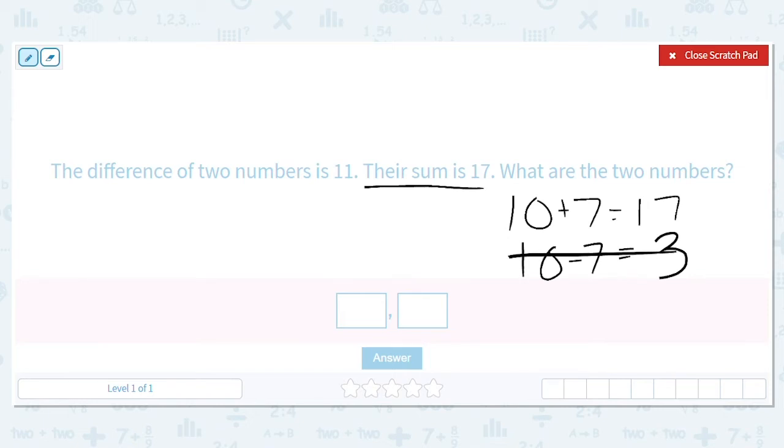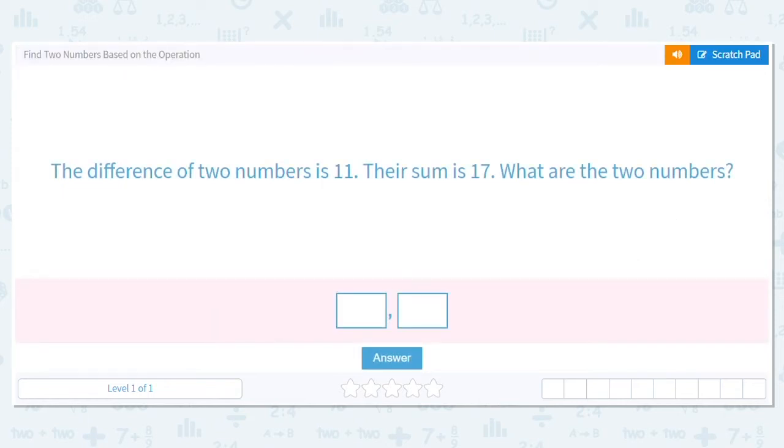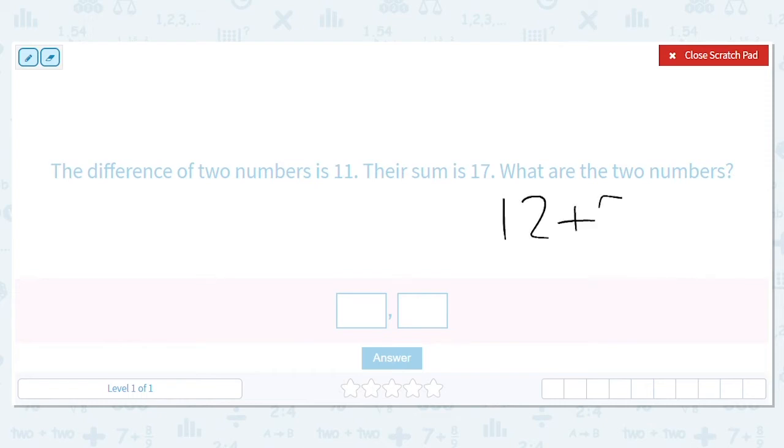Okay, so we have to get this subtraction problem up higher. It has to equal 11. So what if I try 12 plus 5? 12 plus 5 equals 17. What is 12 minus 5? That's 7. So we're getting closer, but we're not quite there.